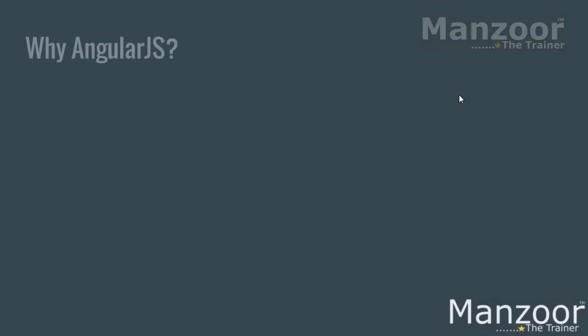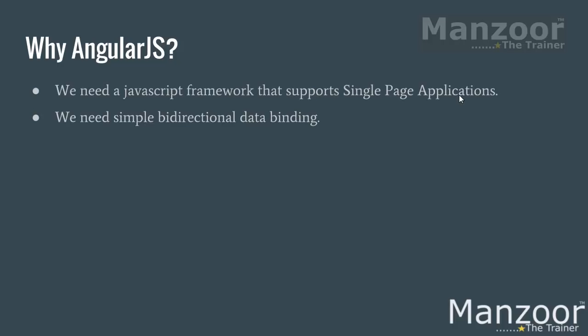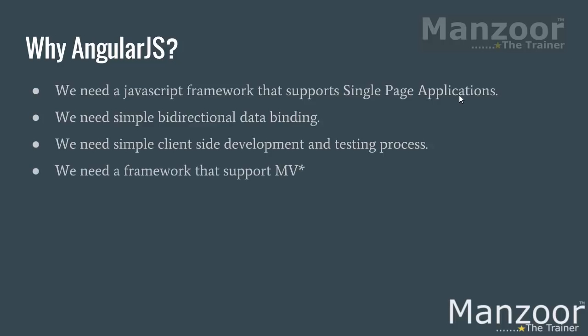Why do I need AngularJS? Because it supports SPA and it supports bi-directional data binding. What is bi-directional data binding? If I update the data in the model, it gets automatically reflected in the view. If I update the data in the view, it gets automatically reflected in the model. So you can achieve MVVM or MVC. I want a simple development and testing process, and I want a framework that supports MVC or MVVM at the client side.